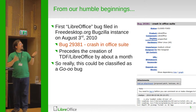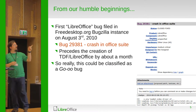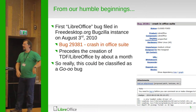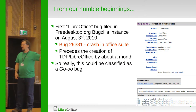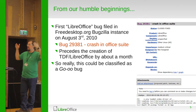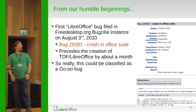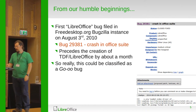The first LibreOffice bug I could track down was filed about a month before the actual creation of LibreOffice — a crash in an office suite. This is classified as coming from a predecessor, Go00, which is one of the predecessors or parents to the LibreOffice project. These are our humble beginnings with QA and bug tracking.